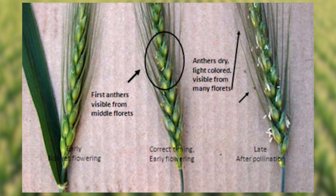Once the heads have fully emerged and begin flowering is when we need to think about making that fungicide application for wheat. I suggest making a fungicide application when 50 percent of the field has reached stage 10.5.1, which simply means that the wheat heads have begun flowering. Wheat heads will start to flower from the middle of the head and work their way up and down from there.